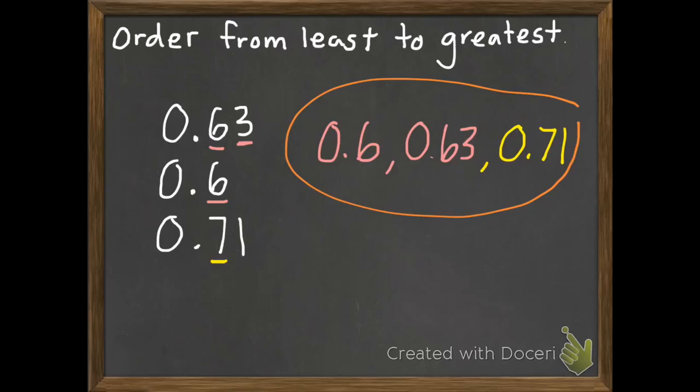So that gives you three different strategies besides just being able to look at it and see. So you can draw pictures. You can use number lines. You can kind of put them on top of each other so that you can just look at each place value spot a little bit easier. And each of those strategies should be able to help you.